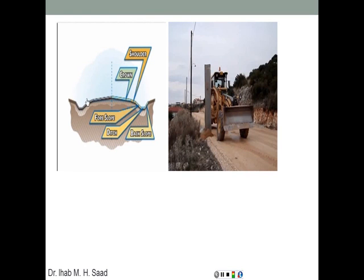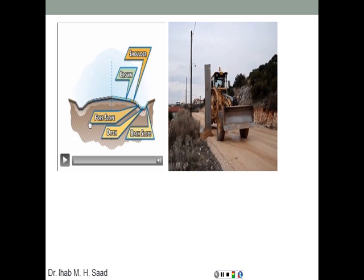It's mostly used to shape the different parts of the profile of a highway — for example, for the ditches, the back slope, the foreslope, the crown, and the shoulders. This is essentially what the grader is going to be used for: to shape all of these different features.